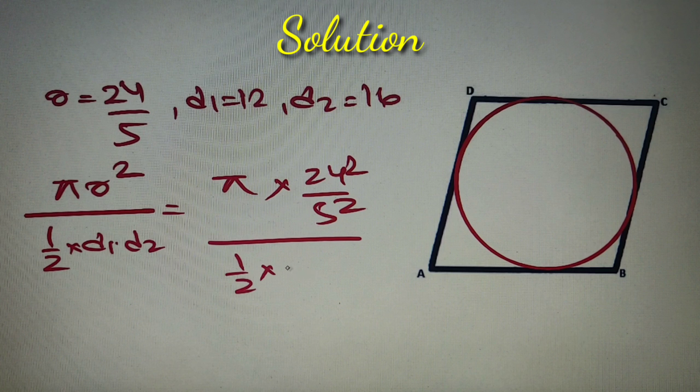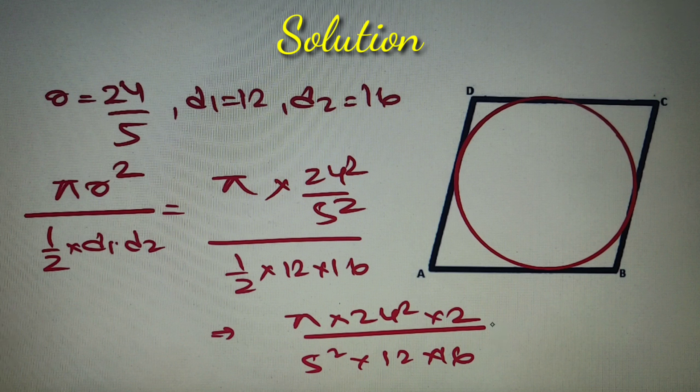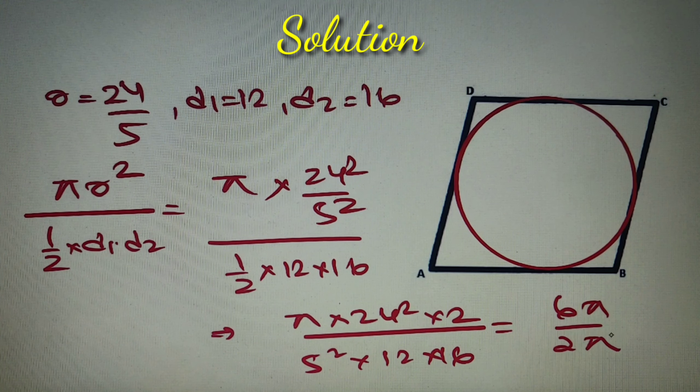So that is equal to pi into R square which is equal to 24 square by 5 square and half into D1 into D2 is equal to half into 12 into 16. Now upon calculation this will come as pi into 24 square into 2 whole divided by 5 square into 12 into 16. Now upon cancellation this value will come as 6 pi by 25.